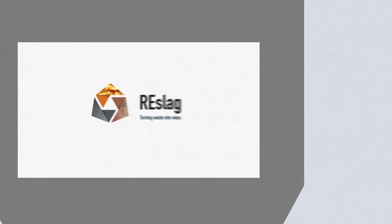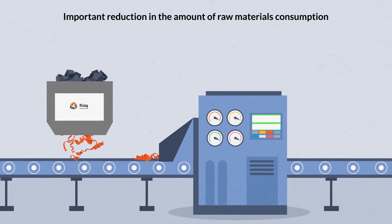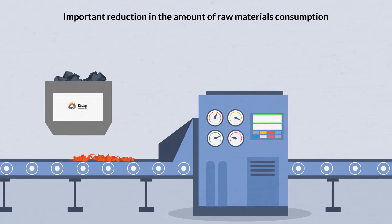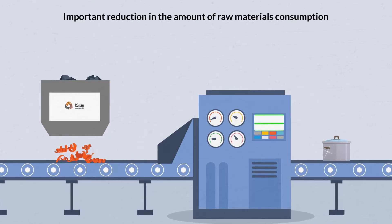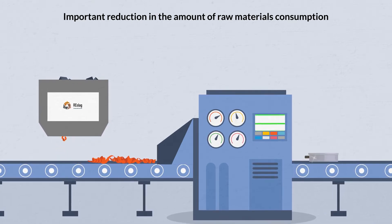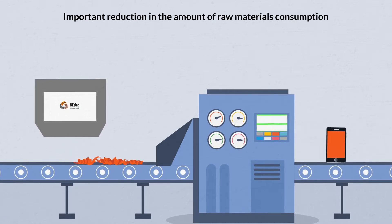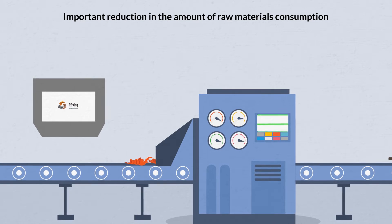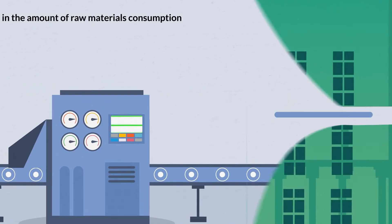As feedstock to extract high added value metals, steel scrap typically contains relevant concentrations of chromium coming from stainless steel, rare earth metals from electronic devices, among other critical metals that, if properly recovered, can imply important reduction in the amount of raw metals consumption by the industry.